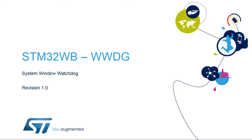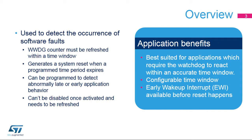Hello, and welcome to this presentation of the STM32 System Window Watchdog. It will cover the main features of this peripheral used to detect software faults. The Window Watchdog is used to detect the occurrence of software faults and can be programmed to detect abnormally late or early application behavior.